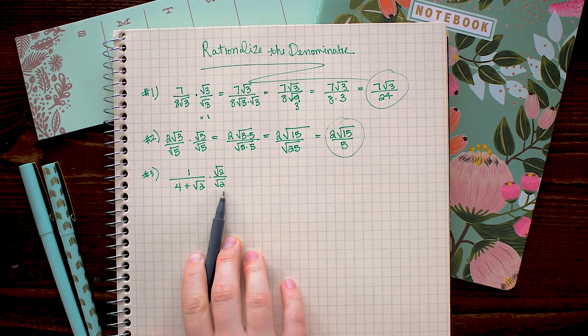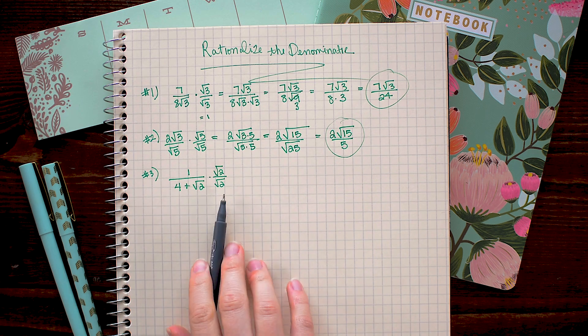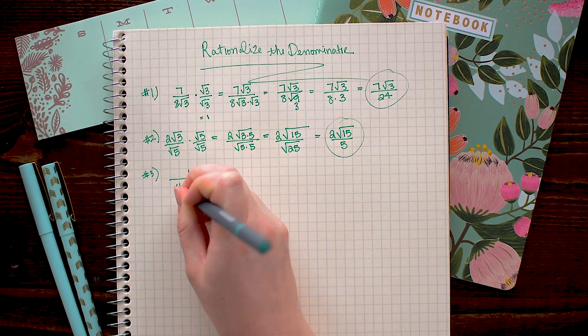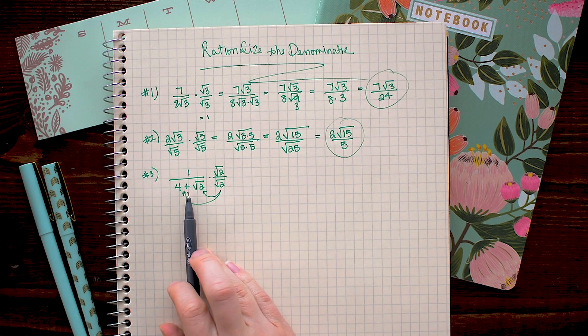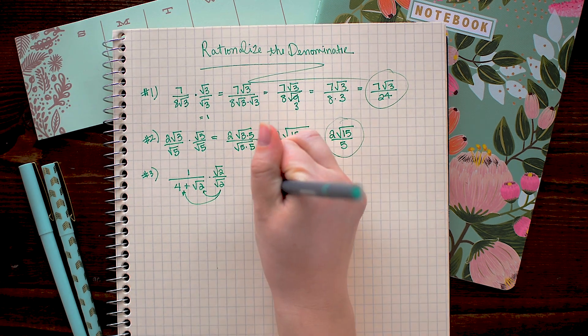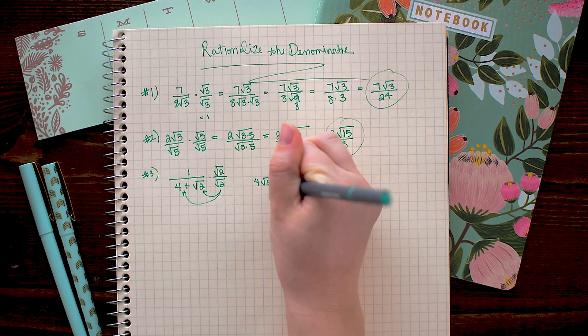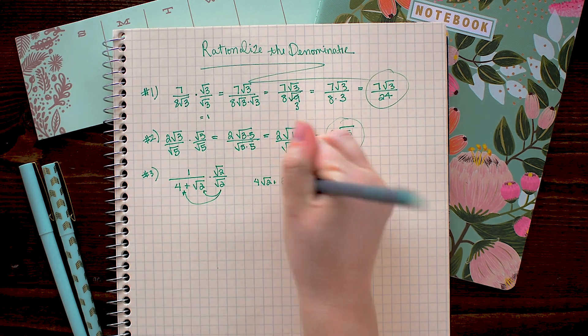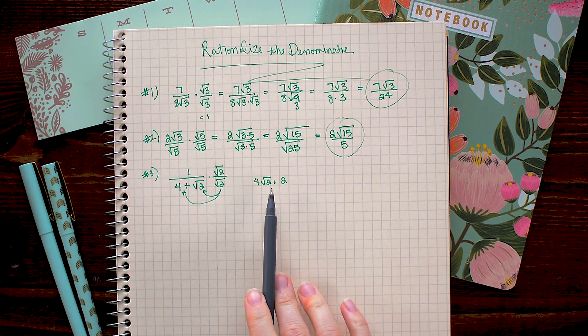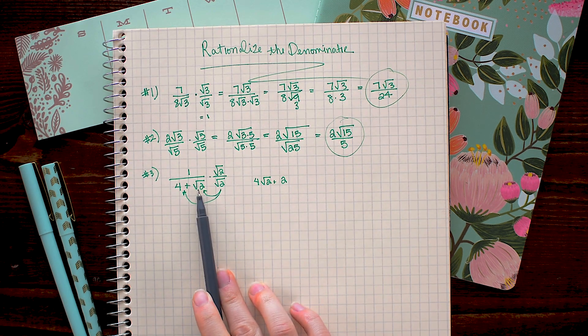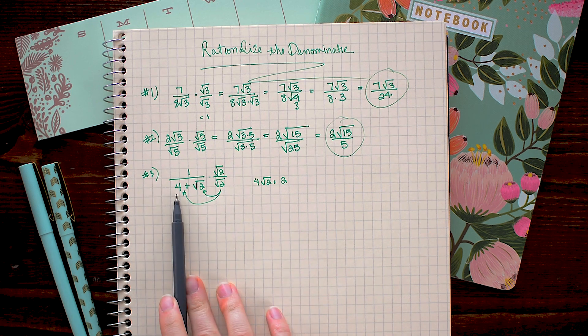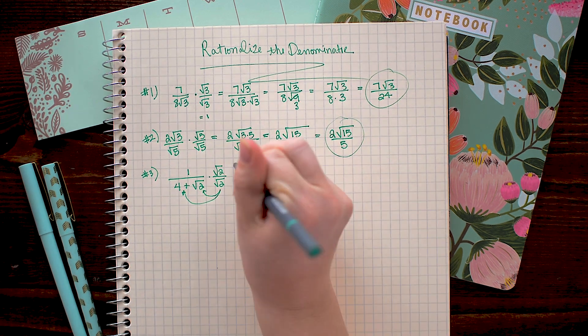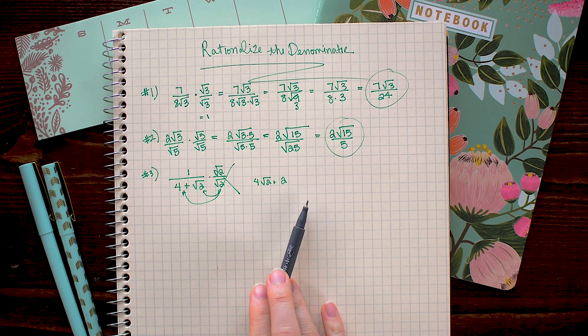So, multiplying by square root 2 over square root 2, like we did in the last two examples, we see that here we have to distribute the square root 2 in the bottom. And when we do that, we get 4 square root 2 plus the square root of 4, which is 2. Now that helped us to get rid of this square root 2, but it introduced a new square root 2 here, where we multiplied it with the whole number. So this does not work in this situation.